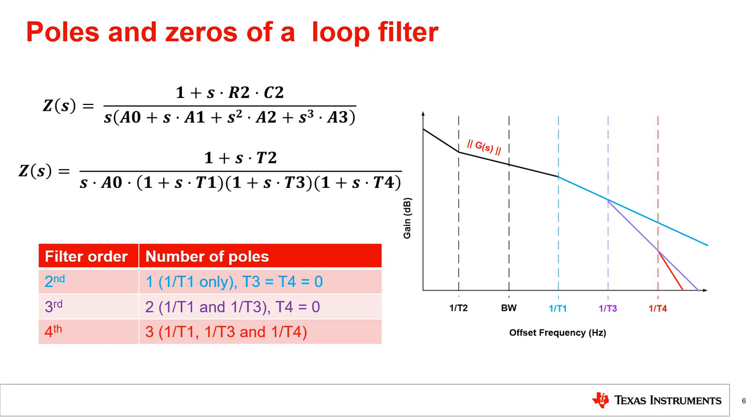When T3 and T4 are equal to zero, the poles move to infinity and the equation of the denominator in the equation of loop filter transfer function is reduced in terms. For example, if T3 equals zero, then 1 plus s times T3 equals 1.